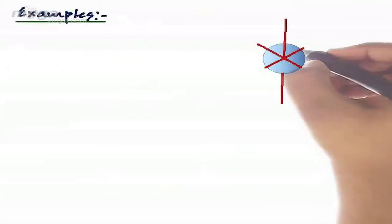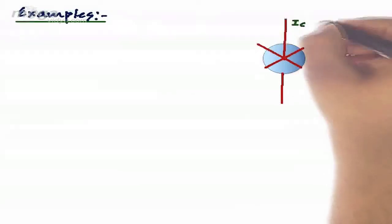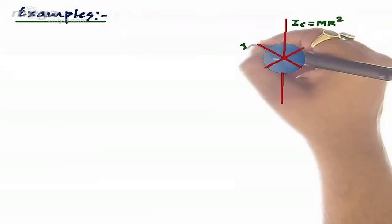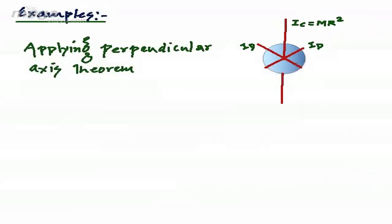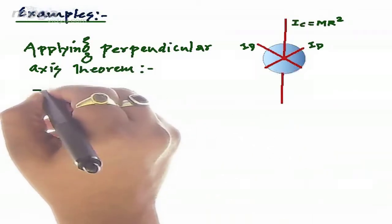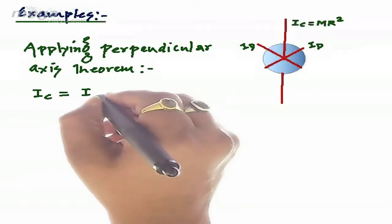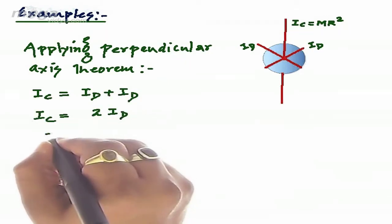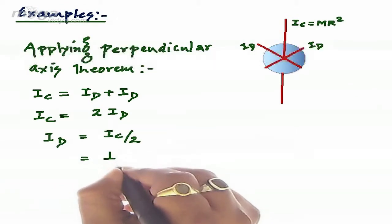Let us take an example. Consider a ring whose moment of inertia along the centroidal axis Ic equals MR². We are required to calculate the moment of inertia along the diameter. Considering two diameters, let the moment of inertia along both diameters be Id (they are equal by symmetry). Applying Perpendicular Axis theorem: Ic = Id + Id = 2Id, so Id = Ic/2 = 1/2 MR².